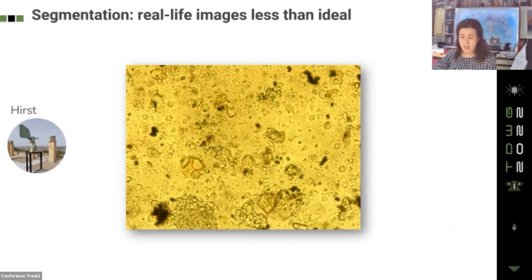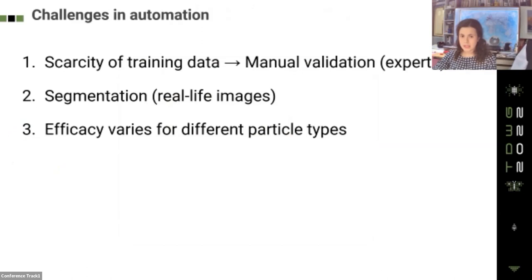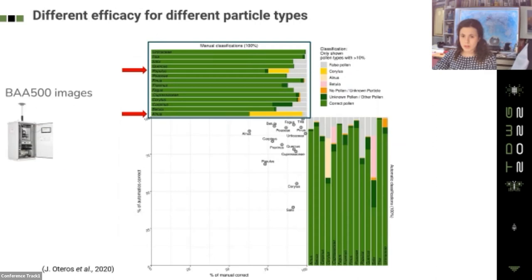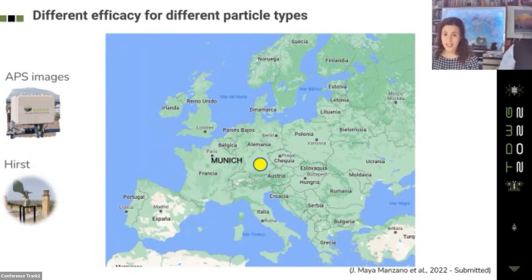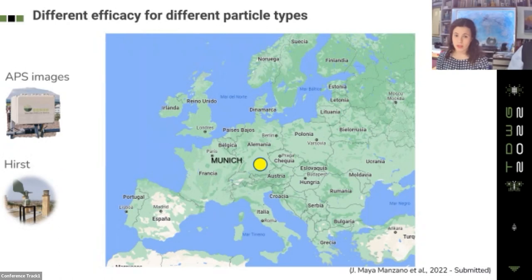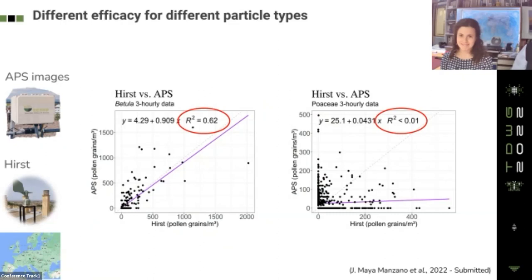While an algorithm can be quite precise with some objects, it can also struggle to classify others. In a study of the performance of the automatic monitor BIA500, we observed that while it is quite good overall, some taxa are prone to misclassifications. When validating the system's automatic data with a collocated reference manual trap during the spring season in Munich, some species had good correlations while others were, to put it mildly, less than ideal. A possible explanation is that the training set might be rather localized.